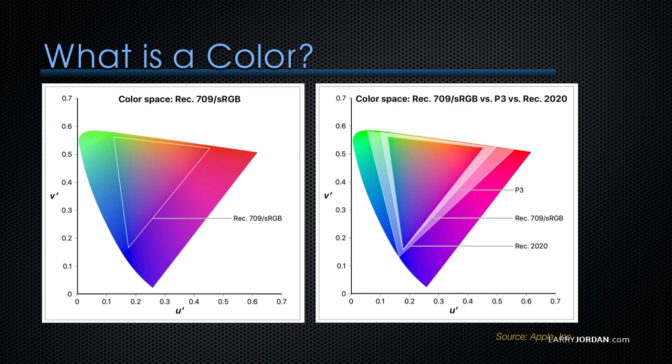HD is Rec. 709, the inner triangle. P3 is where we are today. The outer rectangle is where we're going.